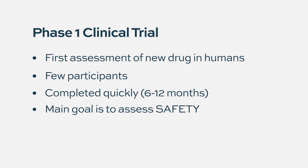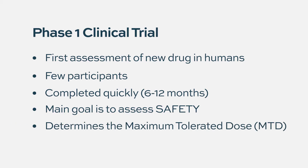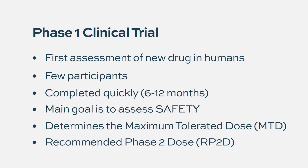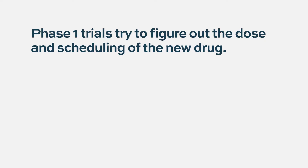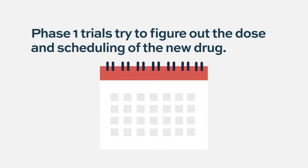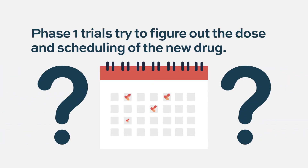The goal of a phase one trial is to assess safety primarily. What we try to gain from a phase one trial is identification of what's called an MTD, or maximum tolerated dose, or a recommended phase two dose. A phase one trial's purpose is typically in new drug development — trying to understand what the right dose and schedule is for a new drug.